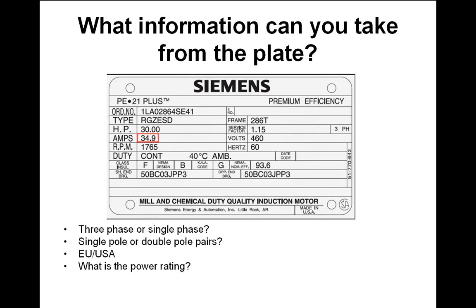Ryan identified correctly: 60 Hz motor, so it's made for the USA. 35 amps current. USA operates at 60 Hz as their mains supply frequency.